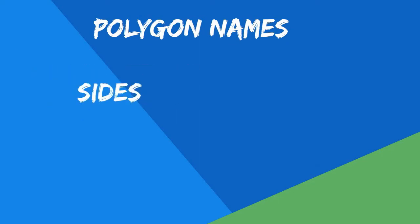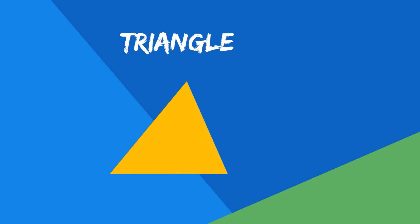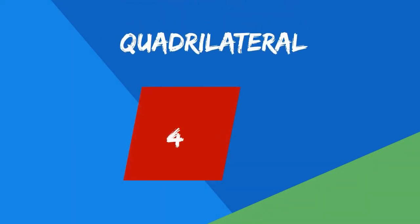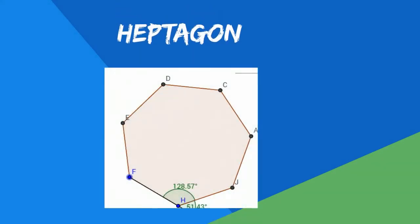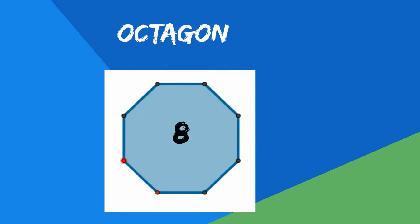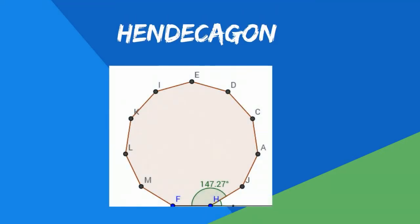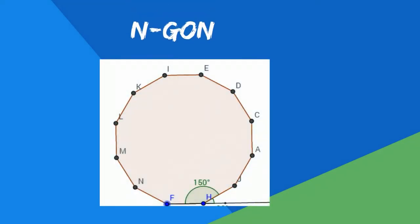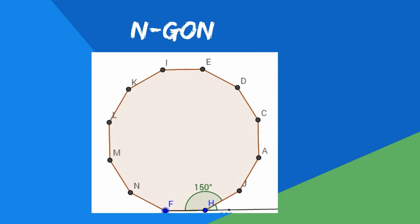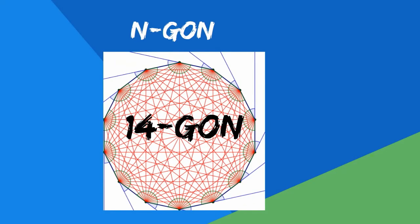Polygons are also named after the number of sides and angles. Here is a list of common polygons: a triangle has three sides, a quadrilateral has four sides, a pentagon has five, a hexagon has six, a heptagon has seven, an octagon has eight, a nonagon has nine, a decagon has ten, a hendecagon has eleven, and a dodecagon has twelve. After twelve, the names get complex, and it is acceptable to give the number of sides followed by '-gon' — for example, a polygon with fourteen sides would be a fourteen-gon.